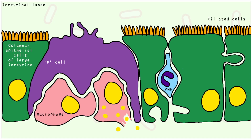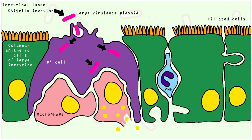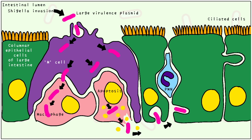Shigella usually invades the mucosa of the large intestine, gaining entry through M-cells. This is mediated by a large virulence plasmid, which means that Shigella possesses many proteins that aid in its entry. It spreads through macrophages, which undergo apoptosis and spill out the bacteria. They enter the cells through junctional complexes, where they multiply.